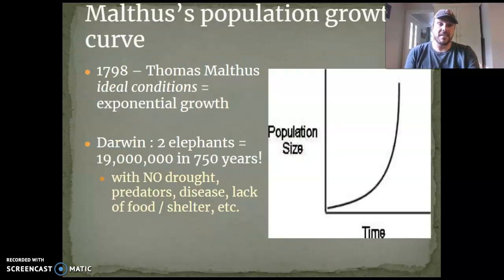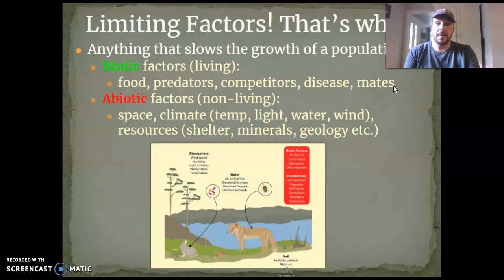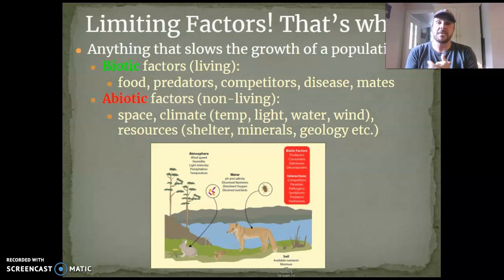That's as long as there's no drought, no predators, no disease, no lack of food or shelter — which is pretty much impossible. Limiting factors are the reason why there is no uncontrolled growth. Our population is going to reach a certain point where it can really take off, and until we lack food, shelter, water, or space, we're going to have exponential growth — which is sort of what the human species is experiencing right now. So limiting factors are things that slow the growth of a population.